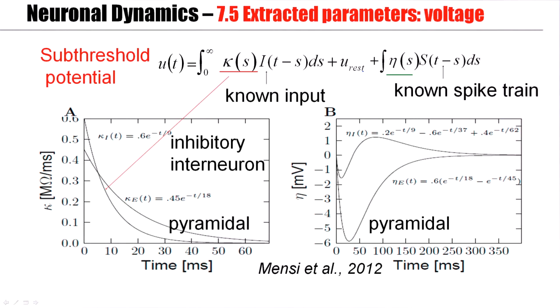Now, if we apply this in order to optimize parameters of the subthreshold potential of a real neuron, let me find the filter kappa, which looks like this. And in fact, it can be fitted just by an exponential function. This would be the filter of an inhibitory neuron. Here's the filter of an excitatory neuron. Again, an exponential filter with slightly different parameters.